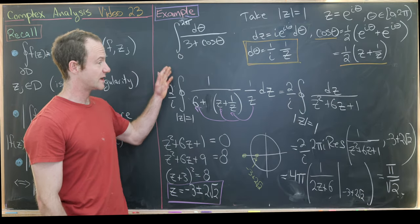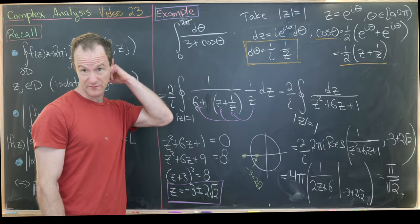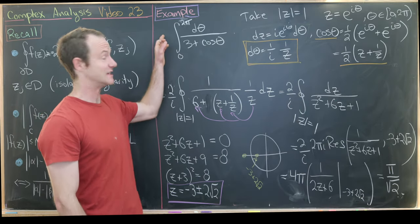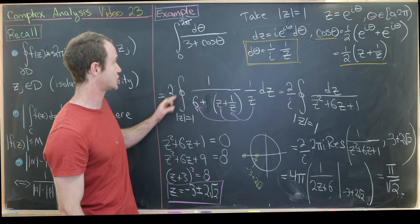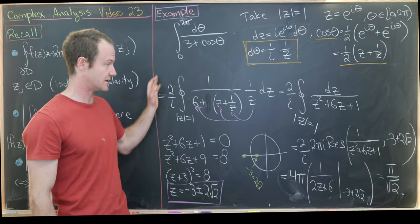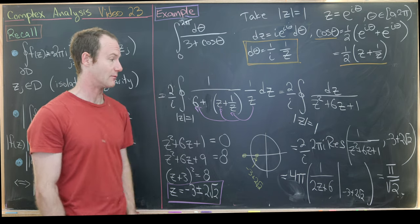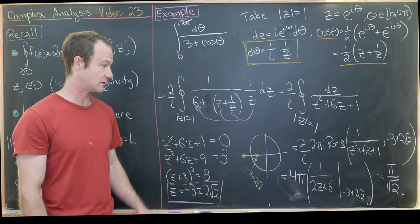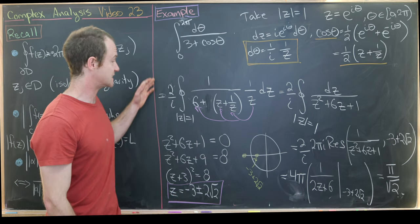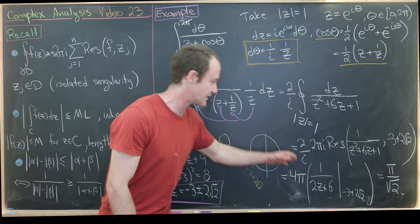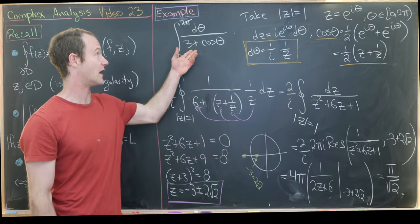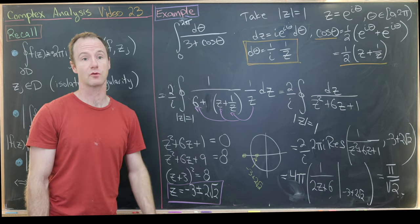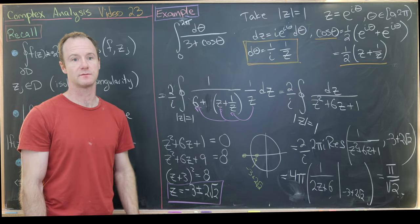Notice here we didn't need any limiting argument — we did a direct substitution of our real integral to a complex integral. So the value we get for the complex integral is exactly the value of our real integral: π/√2.